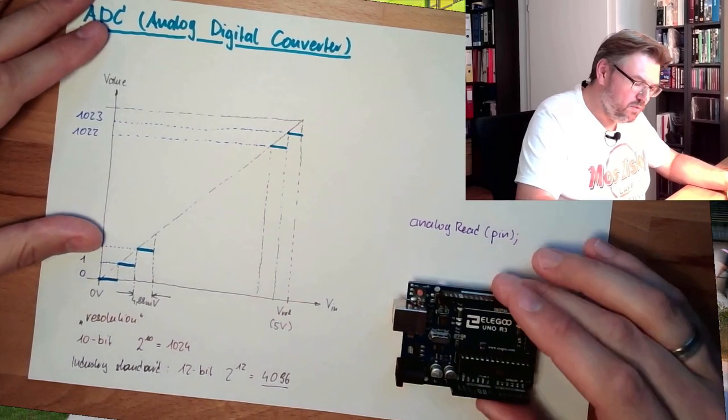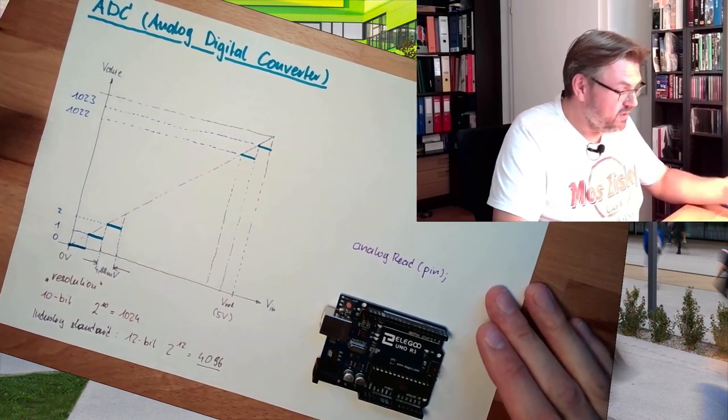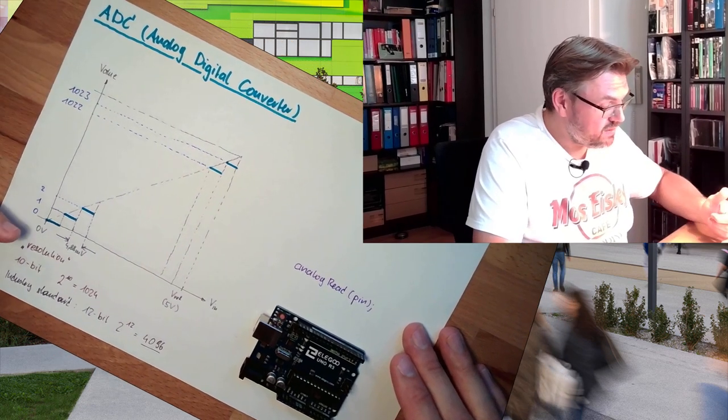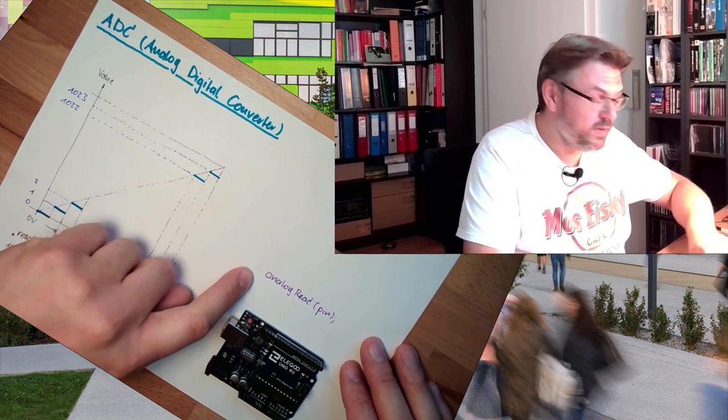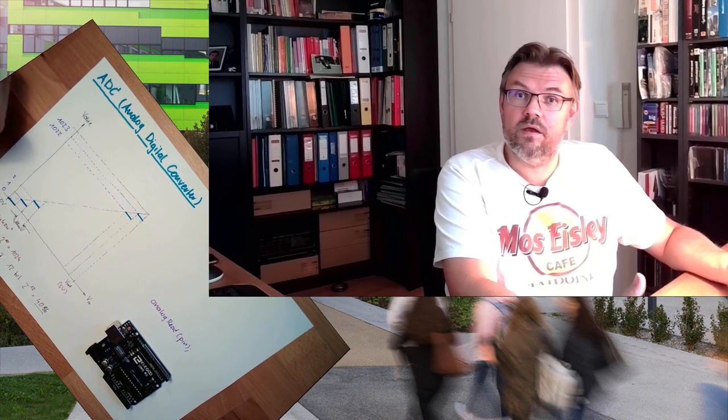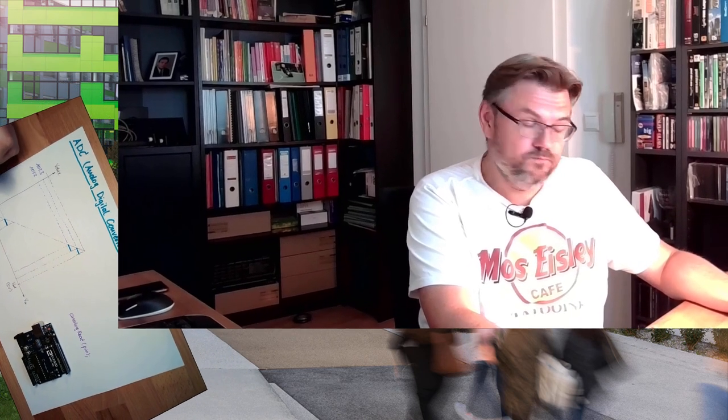But we can read in analog values with a real analog-digital converter and get out here values between 0 and 1023. This is basically how an analog-digital converter is working. Get in a value and the result is a number reflecting the value, from 0 up to the maximum resolution.